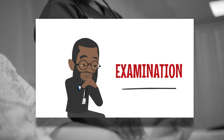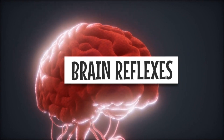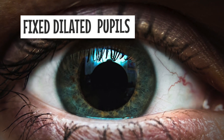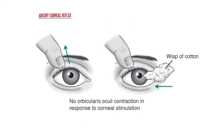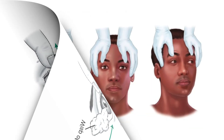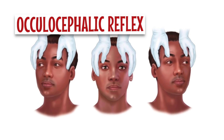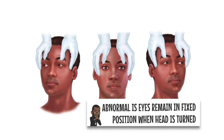Now we move on to the examination. We look for brainstem reflexes, which must be tested bilaterally. Look for fixed dilated pupils or mid-position pupils that are non-reactive. There must be an absent corneal reflex. Check the oculocephalic reflex, also known as the doll's eye maneuver. Please note, this can only be done if the C-spine has been cleared.